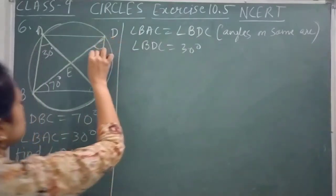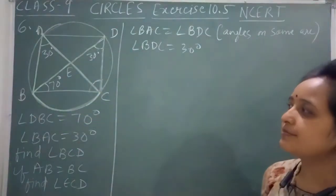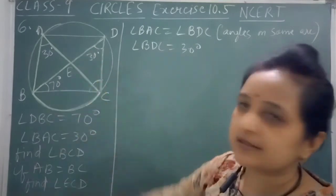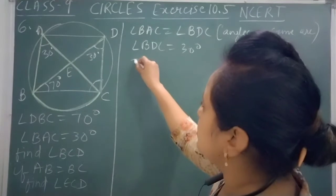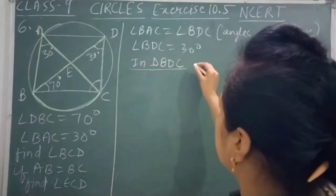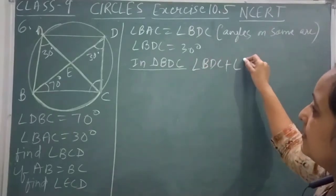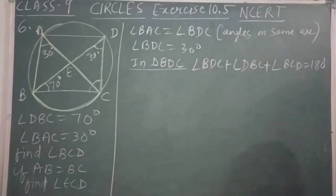Now we will find angle BCD using angle sum property of triangle. In triangle DBC, angle DBC plus angle DBC plus angle BCD equals 180 degrees. This is angle sum property of triangle.